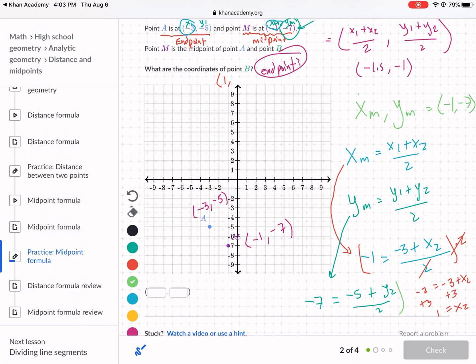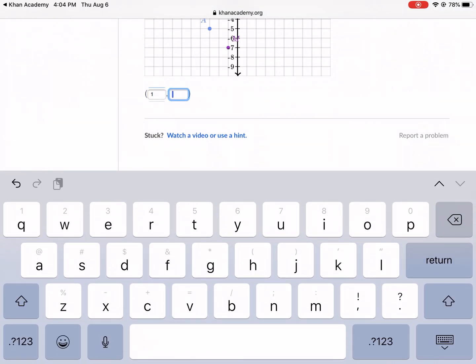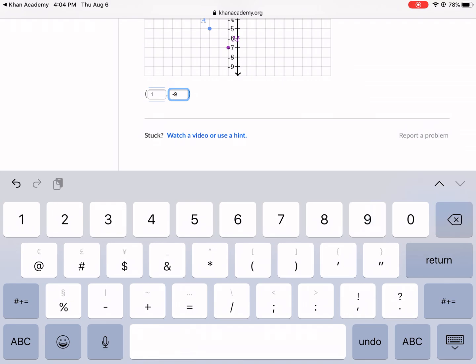I'm going to solve for Y2. What you're going to do is multiply both sides by 2. So I get negative 14 equals negative 5 plus Y2. I'm going to add 5 to both sides, so I get negative 9 equals Y2. So now I have my coordinates: 1 comma negative 9. And if I plot this, 1 comma negative 9, you would see that I could draw a line between these, and these are equal distance away from the midpoint right here. So my answer is 1 comma negative 9.